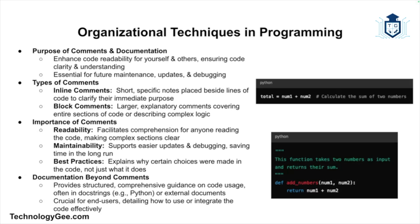The next type is a block comment — larger comments that might explain an entire section of code or provide detailed information, for example: 'this function takes two numbers as input and returns their sum.' Comments help make code more understandable, especially for others reading it later. Well-documented code is also easier to update and debug, and good comments help explain why certain decisions were made, not just what the code is doing.